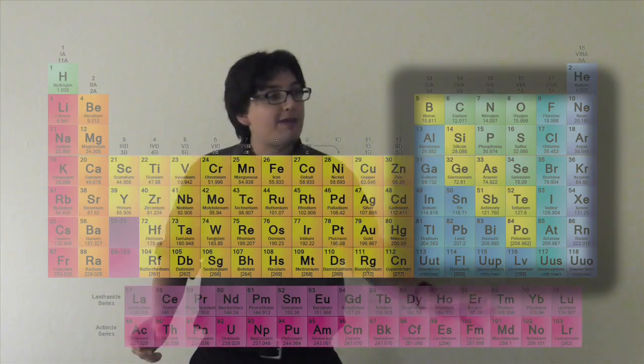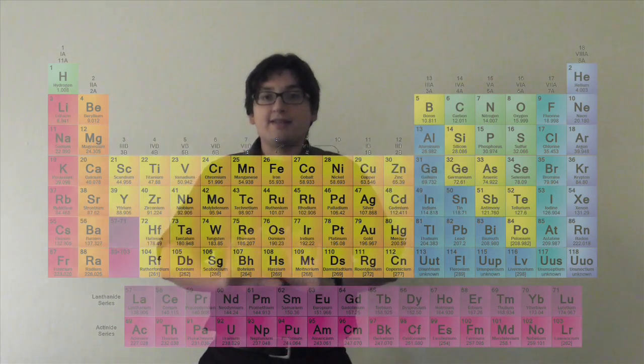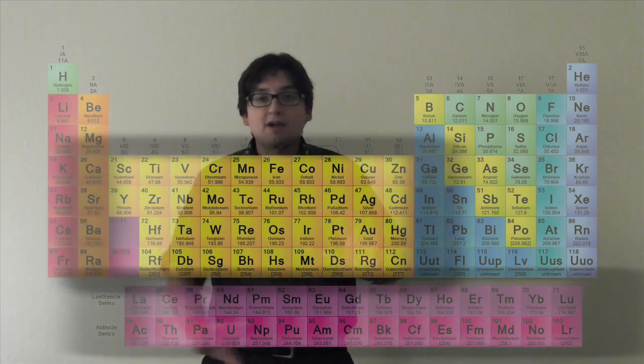And here I've got the p block, and that's why the periodic table is shaped the way it is. And then the d block is this guy, and here at the bottom is the f.